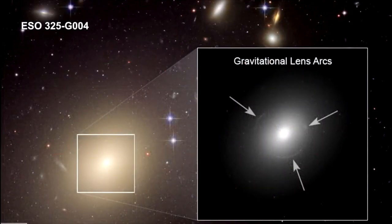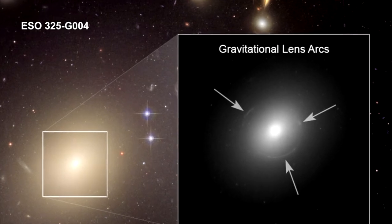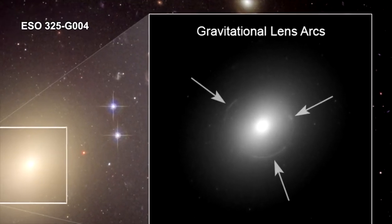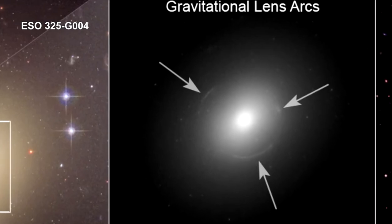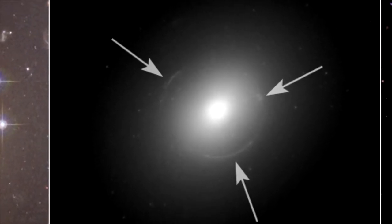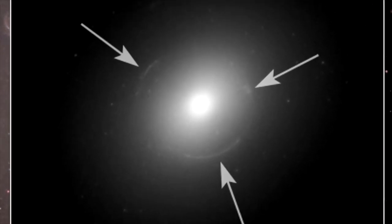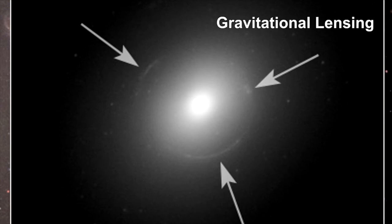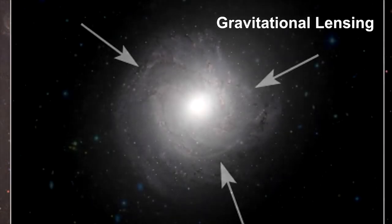You'll remember the Einstein ring we saw around ESO 325-G004 in our segment on local superclusters. The ring was the image of a more distant galaxy. The arc shape was created by the bending of the background galaxy's light by the gravity of the massive foreground galaxy. The process is called gravitational lensing because the mass between us and the background galaxy behaves just like an optical lens.